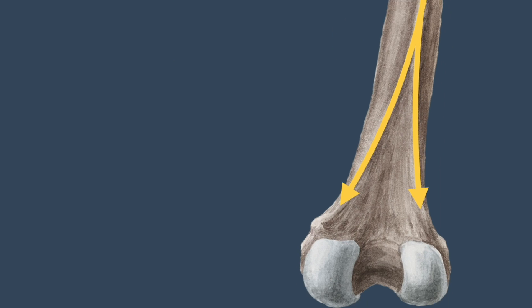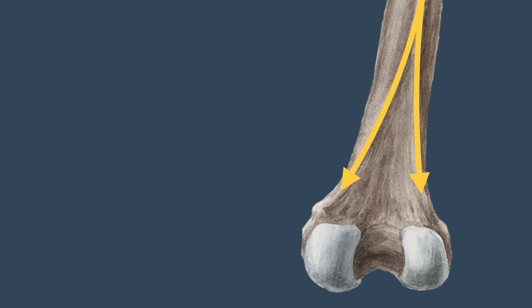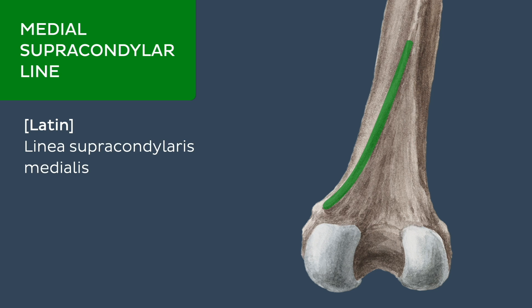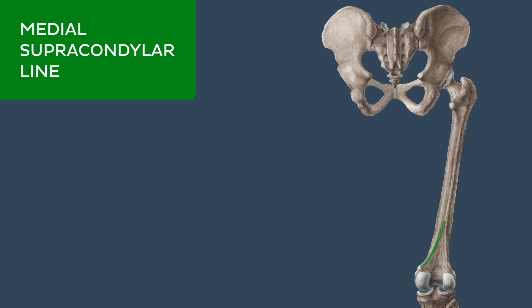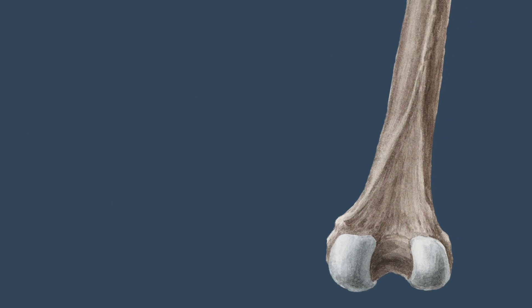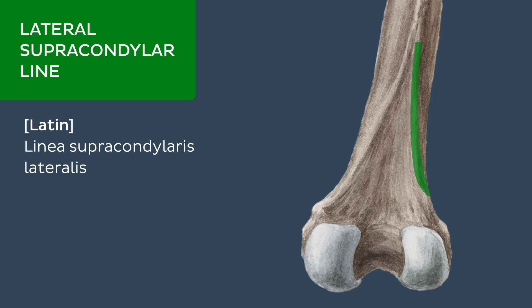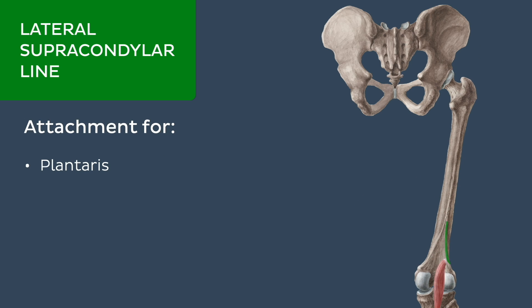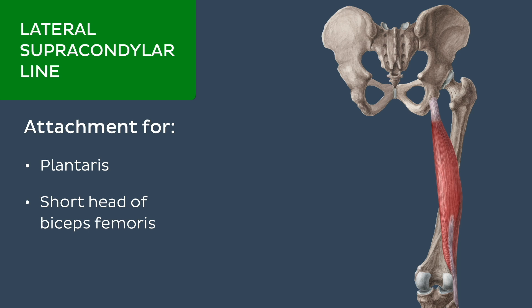Moving distally, the medial and lateral lips of the linea aspera diverge once again to form the medial and lateral supracondylar lines. The medial supracondylar line extends from the medial lip of the linea aspera to the adductor tubercle, acting as a distal attachment site for the vastus medialis and adductor magnus muscles. The lateral supracondylar line arises as an inferior continuation of the lateral lip of the linea aspera and is the more pronounced of the two. It provides an attachment for the plantaris muscle and the short head of the biceps femoris muscle.